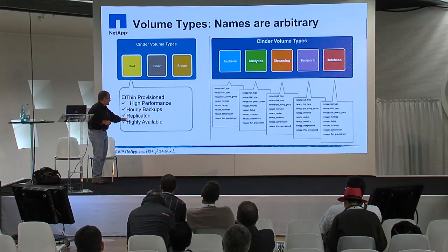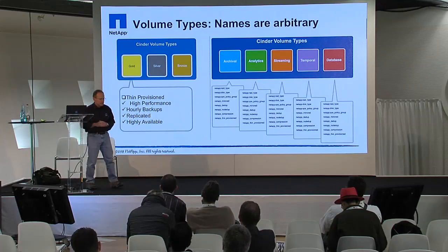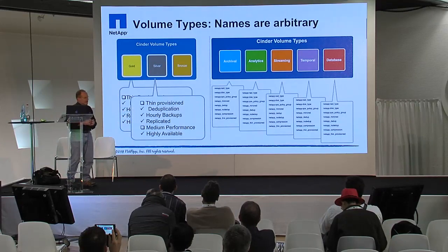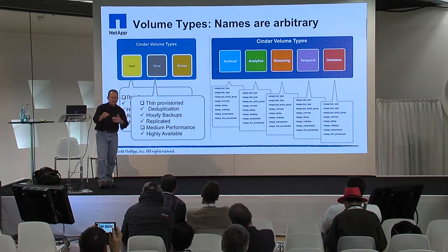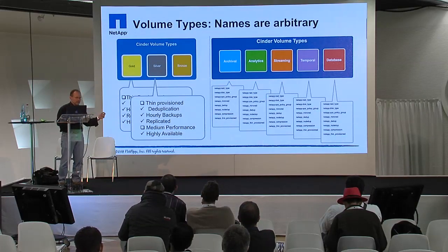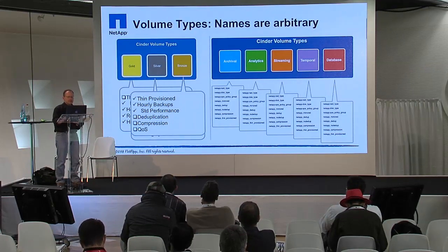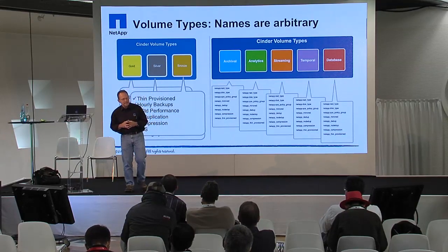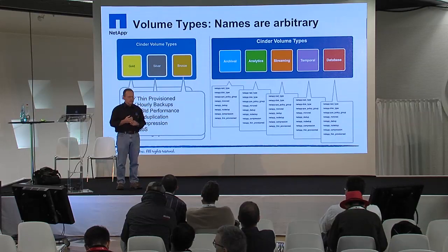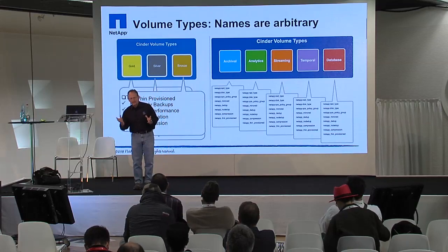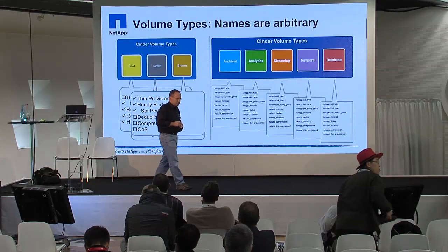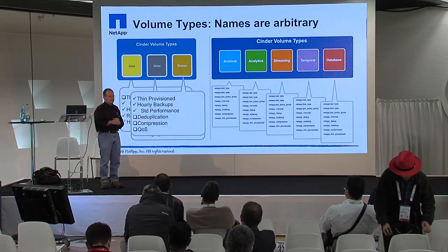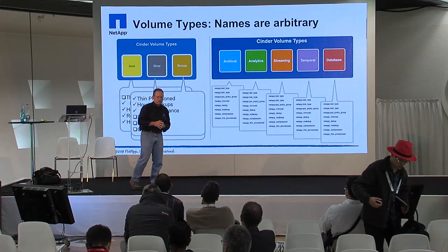Gold can be replicated using SnapMirror, and highly available, taking advantage of the clustering technology within Data ONTAP. Maybe silver means deduplication, still backed up and replicated, but with different SLAs — managing SLAs to the back-end storage and surfacing up NetApp technology. And maybe bronze is thin provisioned, put on SATA spinning media or some low-cost media for higher return on investment — maybe it's there for just a couple of days. So it all depends on the SLA you're trying to provide to your customers.